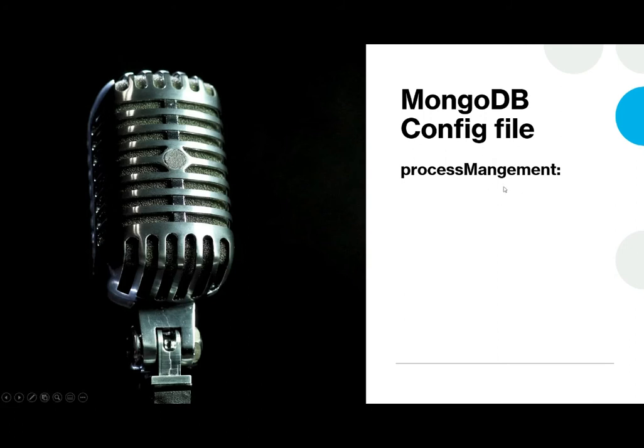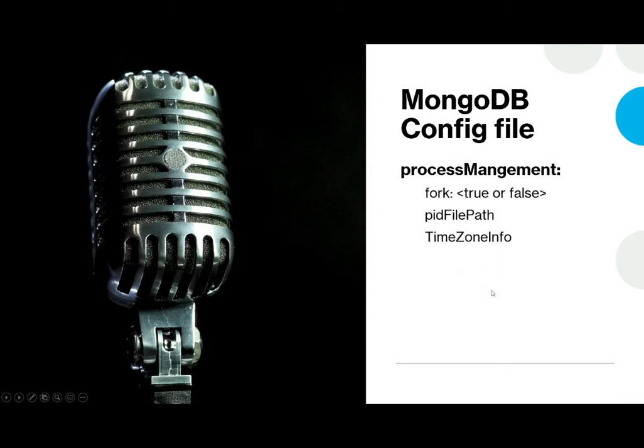There are a bunch of more options, like process management, which takes options for fork, PID file path, and time zone info. Fork supports a boolean and is false by default, because by default MongoDB won't fork itself — so it won't be a background process.